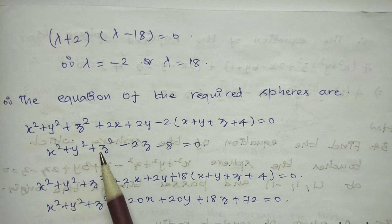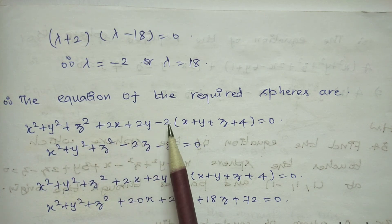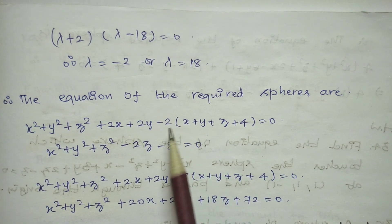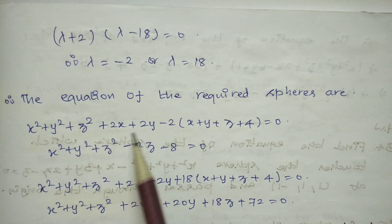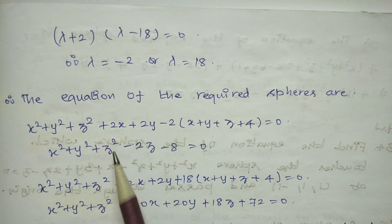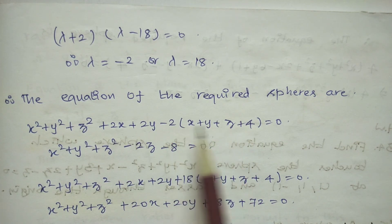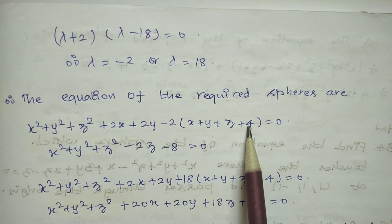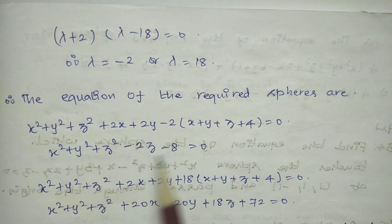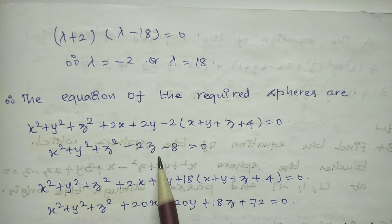Simplifying for λ = −2: x² + y² + z² + 2x + 2y − 2x − 2y − 2z − 8 = 0. The 2x and −2x cancel, and 2y and −2y cancel, leaving x² + y² + z² − 2z − 8 = 0. This is the first required sphere equation.